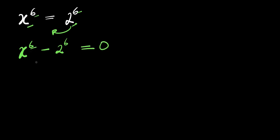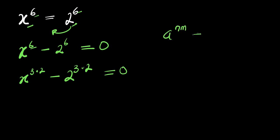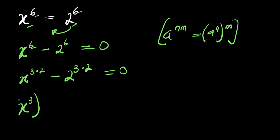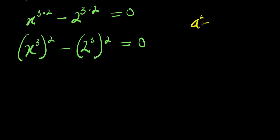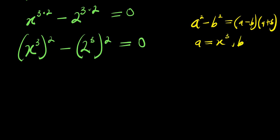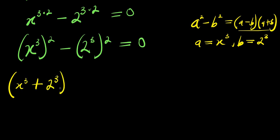Now we can express this as 3 times 2, so x power 3 times 2 minus 2 power 3 times 2 equals 0. Using the rule a to the power n times m equals a to the power n, all to the power m, we get x power 3 all squared minus 2 power 3 all squared equals 0. We can apply the difference of two squares: a squared minus b squared equals a minus b times a plus b, where a is x power 3 and b is 2 power 3. So we have x power 3 plus 2 power 3 times x power 3 minus 2 power 3 equals 0.